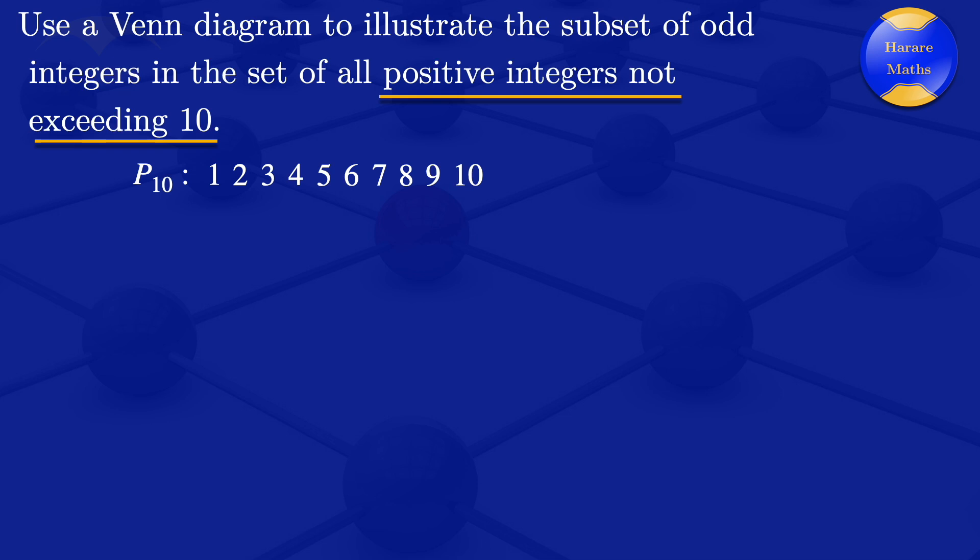So the next step now is to draw the Venn diagram. To draw the Venn diagram, we start with a rectangle and let the points in the rectangle represent the elements of the universal set. So I have that rectangle and it will represent elements which are in the universal set, which I'll denote by U there.